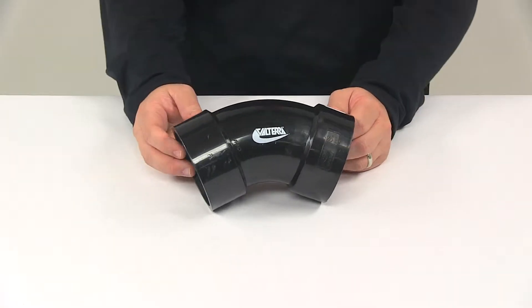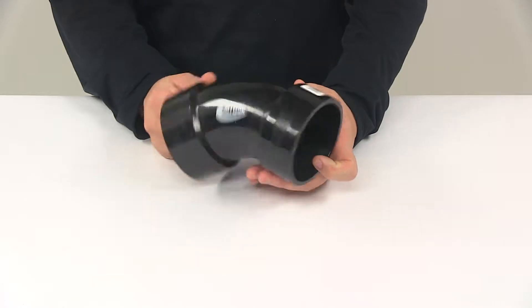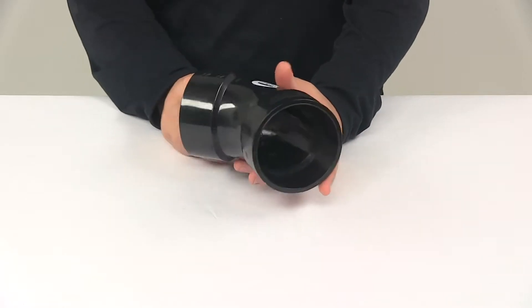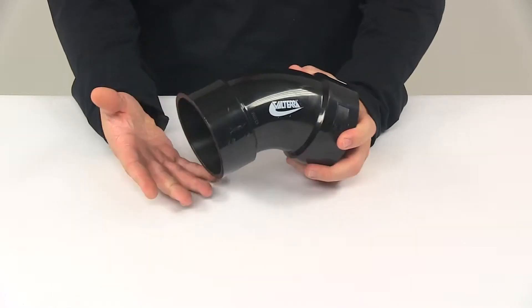Today we're going to be taking a look at the Valterra DWV 45 degree elbow fitting. This fitting is made from a durable ABS plastic construction, black in color.